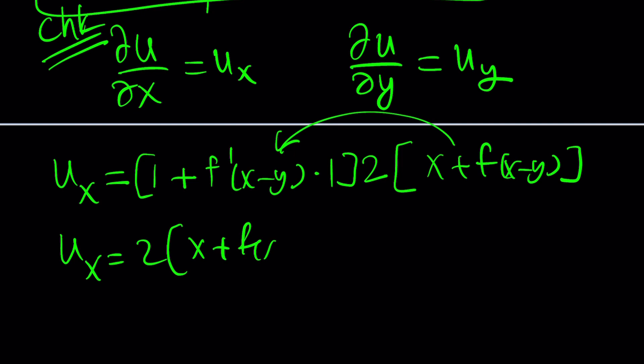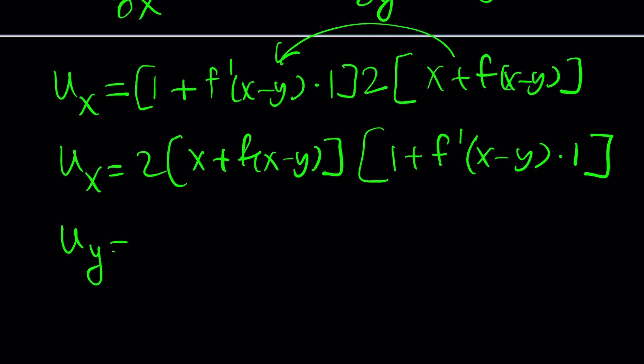So, we basically bring the power down, reduce the power, and then multiply by the derivative of the inside, which is what I did first. It's kind of weird, but that's what it is.